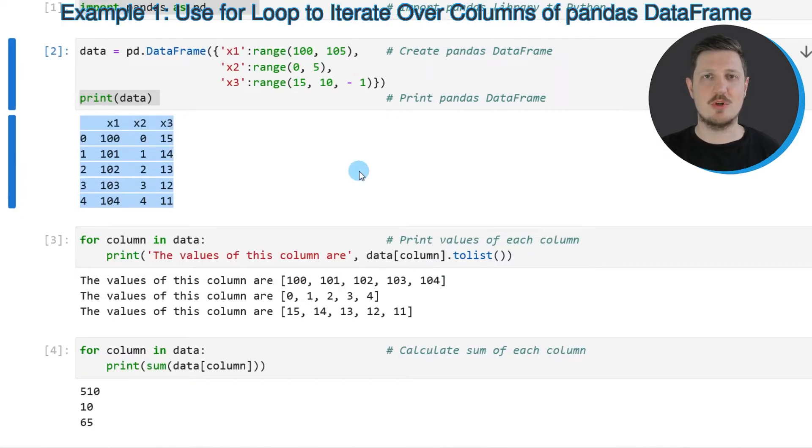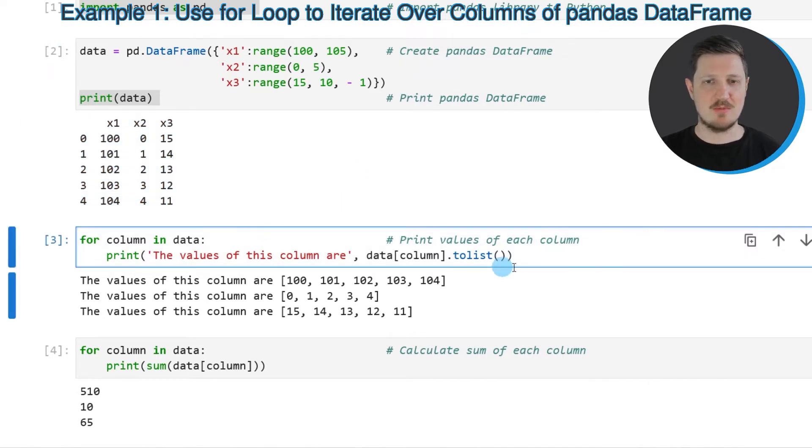Now let's assume that we want to iterate over the columns of our dataframe. Then we can apply the code that you can see in the third code box. So in the first line of this box I'm using a for loop and I'm looping over the columns in our dataframe data.